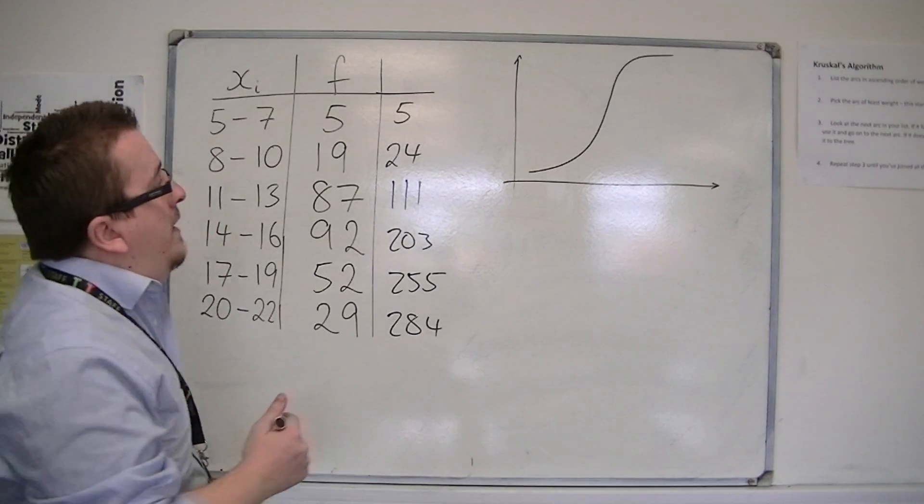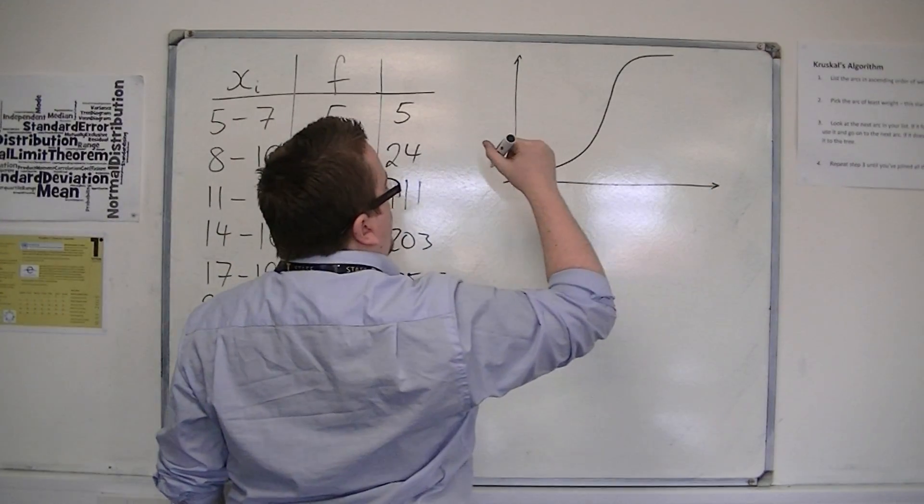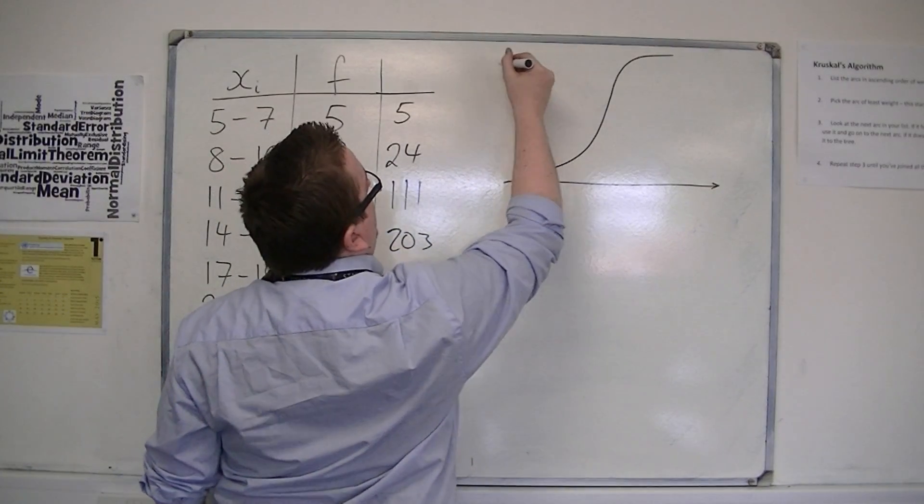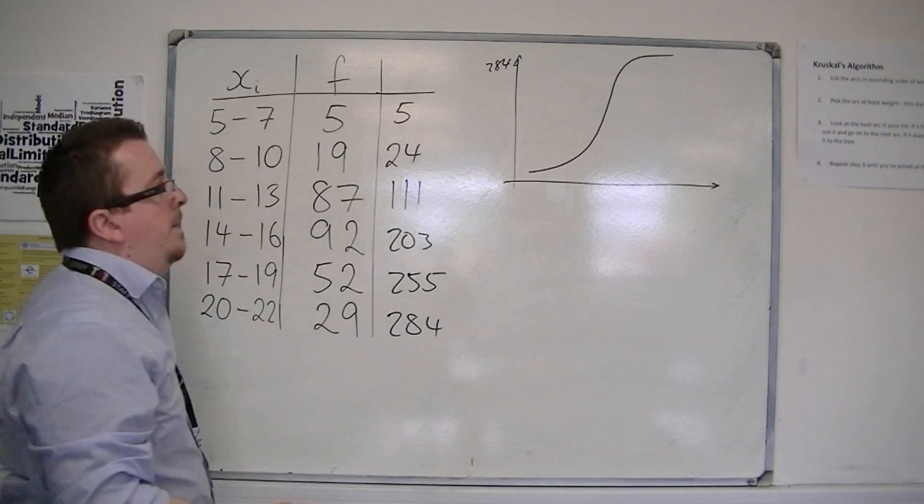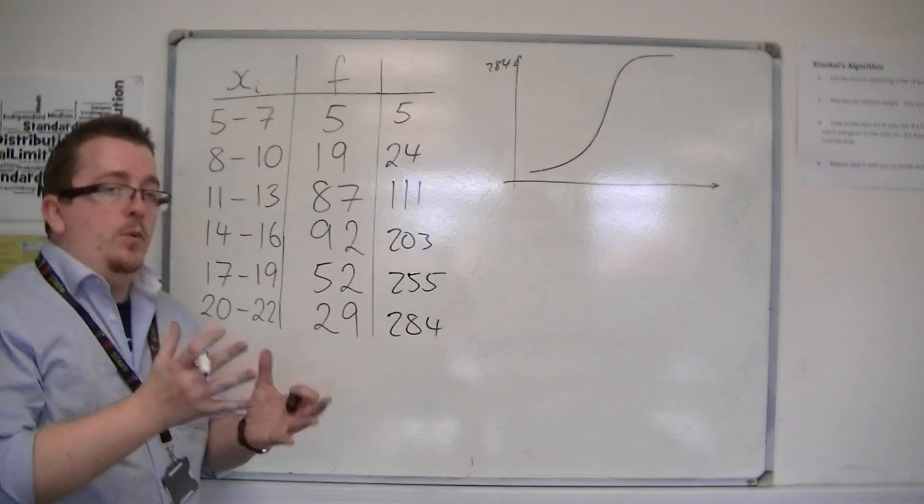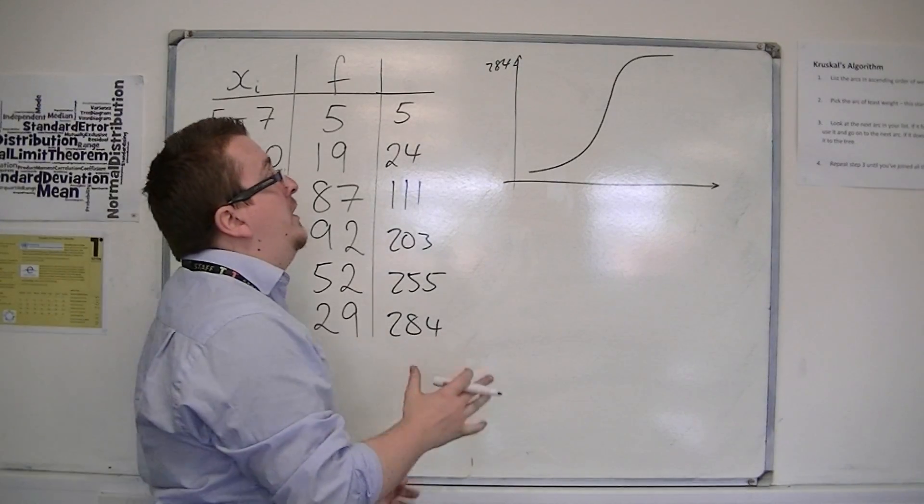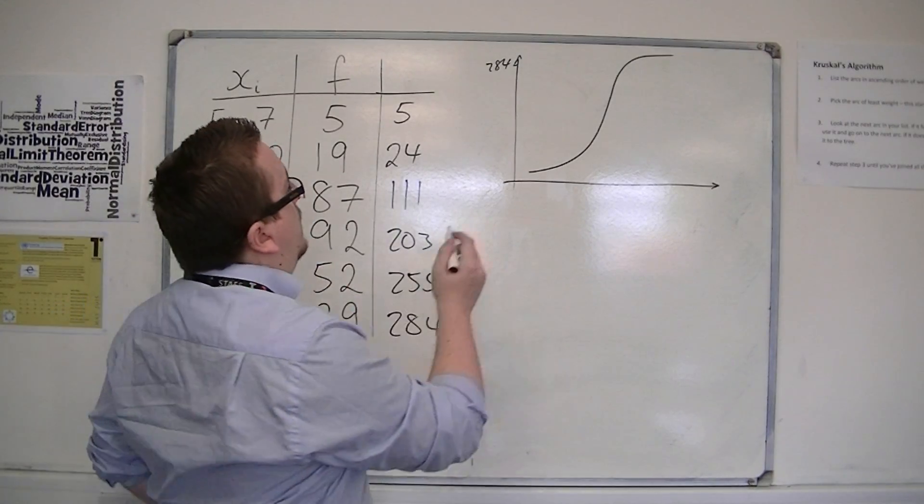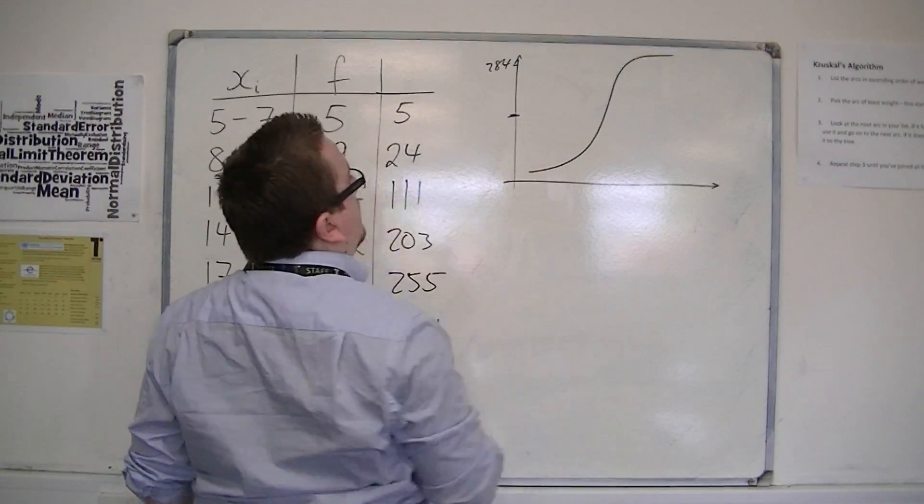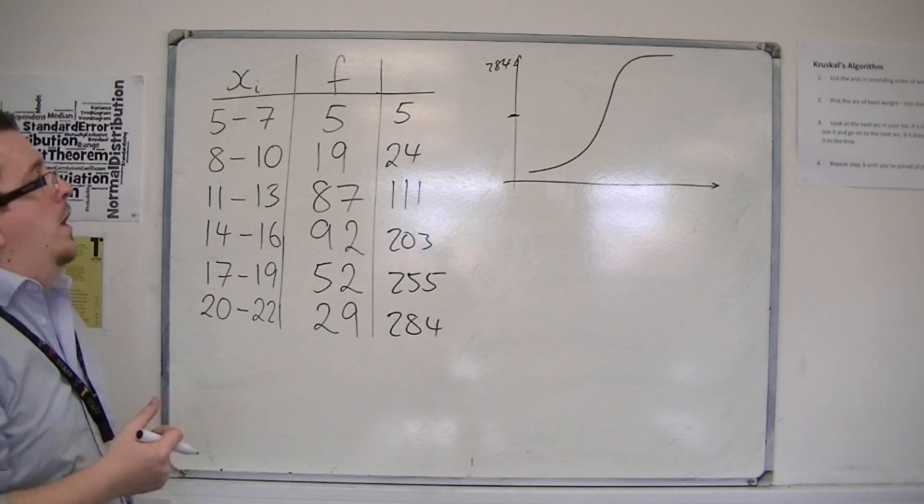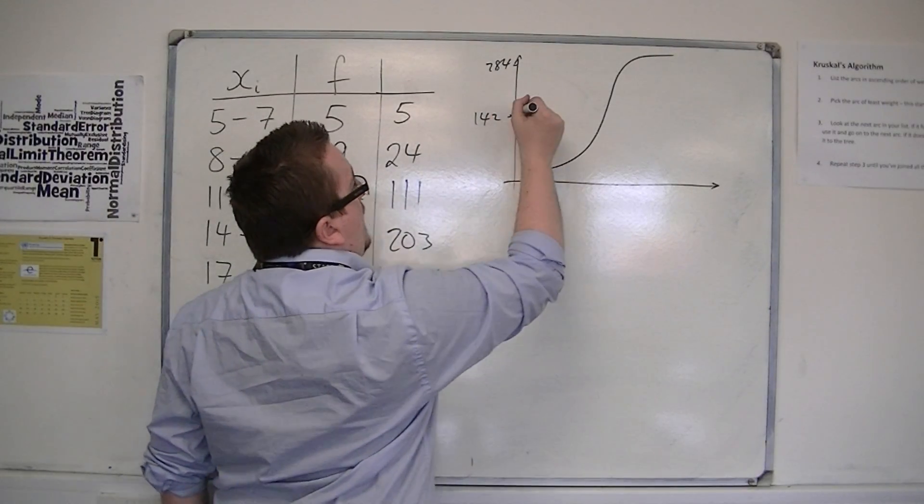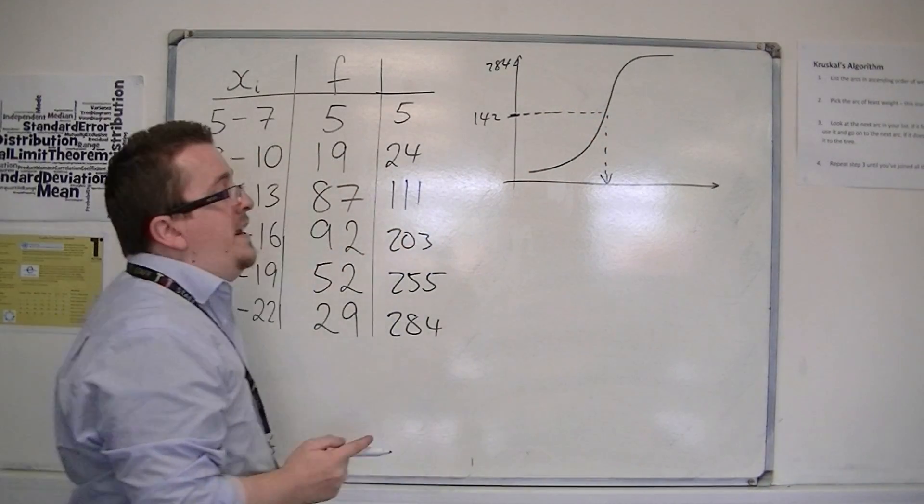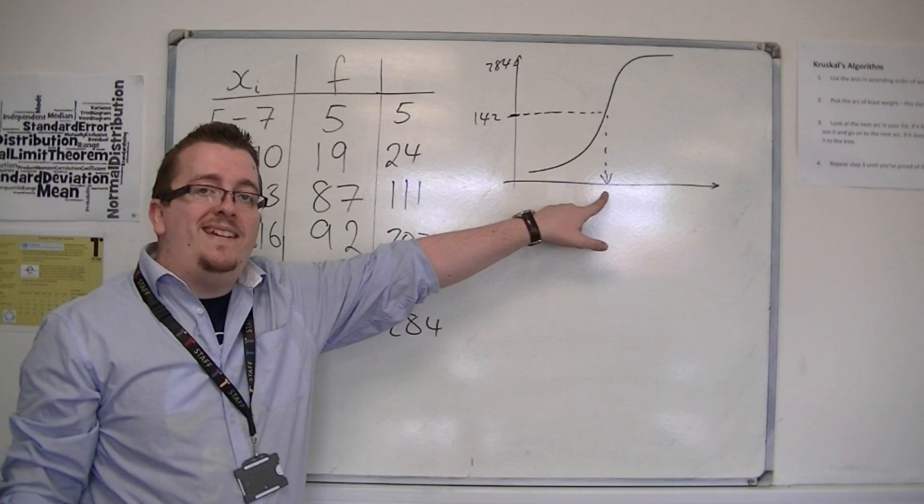So what you would have where the cumulative frequency is up to the side. So this would be going up to 284. And then what you would do is halfway of 284, that would be my median. So 142. And you would go along to the curve and then straight down, and you'd be able to read off your median value.